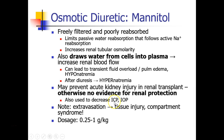Mannitol can also decrease intracranial pressure and is used very commonly in neuro cases where we want to decrease cerebral blood flow and decrease ICP to make the brain softer and easier for surgeons to manipulate. Similarly, it can decrease intraocular pressure. An important clinical point is that when mannitol extravasates out of a vein, it can cause significant tissue injury as the extravascular compartment draws in water. A hand or arm can become very tight and lead to compartment syndrome. So you need to be very careful to always give mannitol through a central line or through a free-flowing vein that you can observe for any signs of complication.